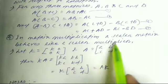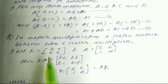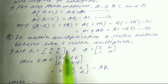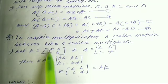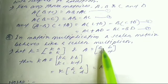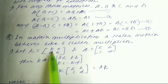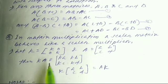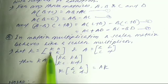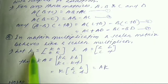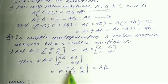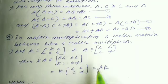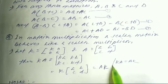A scalar matrix acts like a scalar multiplier. If K is a scalar matrix where K = [k, 0; 0, k] and A = [a, b; c, d], then K·A = [ka, kb; kc, kd]. Also, K·A = A·K — meaning k·A = A·k. This is unlike general matrix multiplication where A·B ≠ B·A.